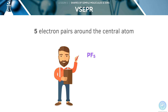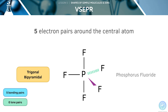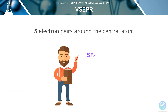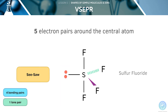Now, let's look at phosphorus fluoride. PF5 has the same shape as PCl5. Phosphorus has five outer electrons and is forming five covalent bonds, so it has no lone pairs and five bonding pairs. This shape is known as trigonal bipyramidal. The bond angles are 90 degrees and 120 degrees respectively. Our next compound is sulfur fluoride. Sulfur has six outer electrons and is forming four covalent bonds, so it has one lone pair and four bonding pairs. This shape is called a seesaw and the bond angles are 87 degrees and 102 degrees.